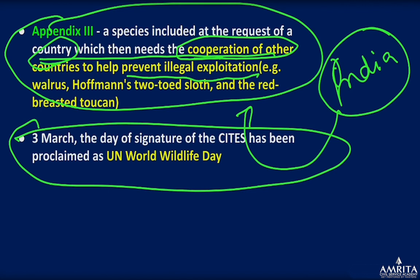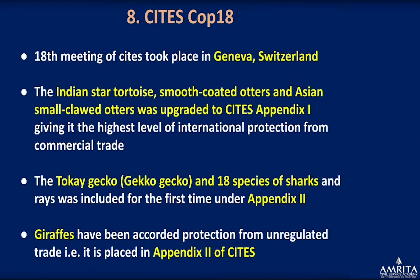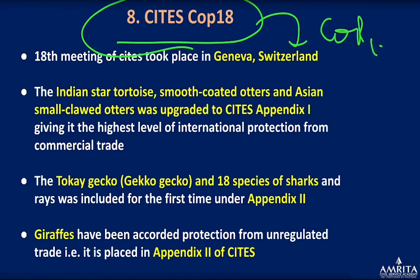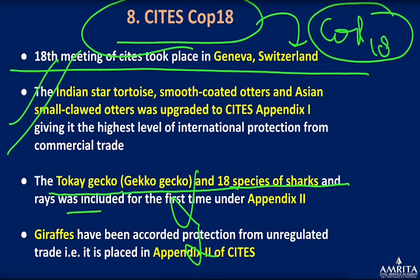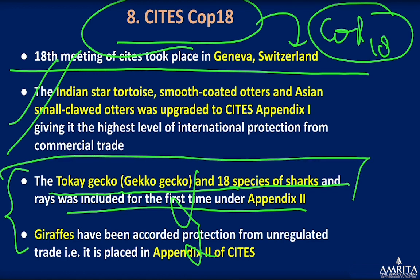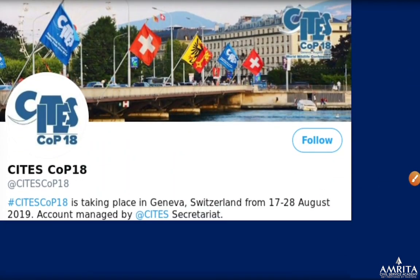The date of signature of CITES has been proclaimed as UN World Wildlife Day. Regarding CITES COP18, the meeting happened in Geneva. What you need to remember is that the Indian Star Tortoise, Smooth-coated Otter, and Small-clawed Otter all had their protection status upgraded. Other items like the tokay gecko and 18 species of sawfish were also included, but focus on the three main species. COP18 was organized in August.